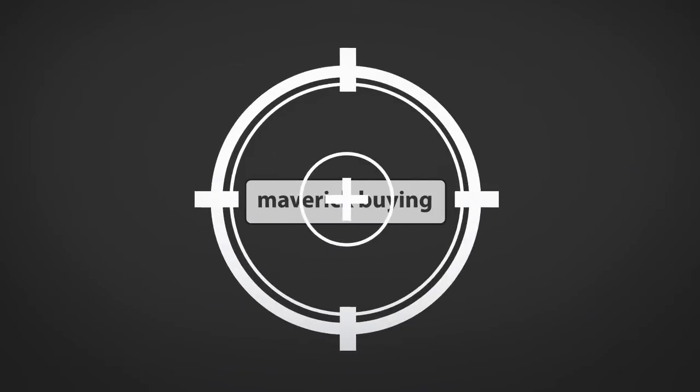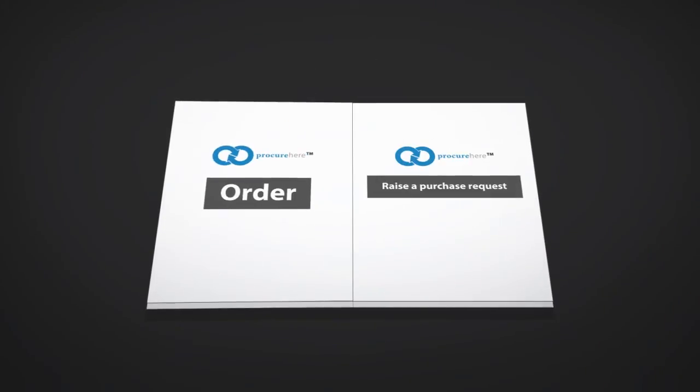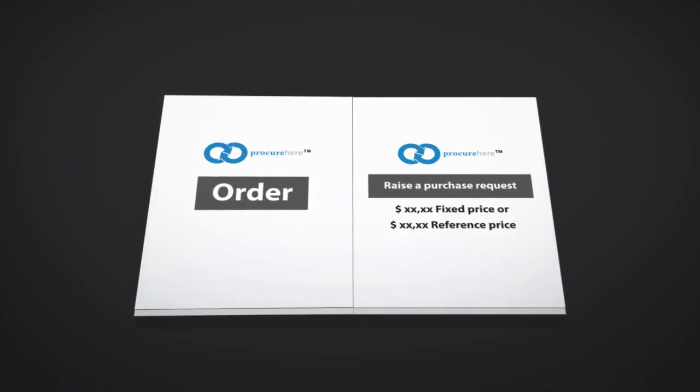You can eliminate maverick buying by adopting the eCatalog solution, which allows you to order or raise a purchase request from this section, where prices can be fixed or used as a reference price.